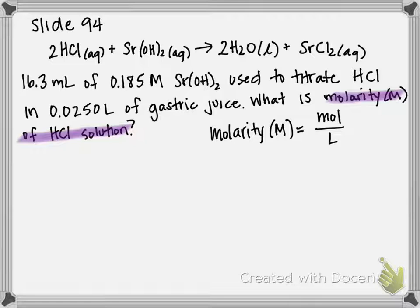Here's the information that we can glean from the problem. 16.3 milliliters of 0.185 molar strontium hydroxide, and then we also know the volume of our HCl solution. So the thing that we know more about, we know the volume and molarity of our strontium hydroxide. That's what we're going to start with. So I'm going to start with volume.